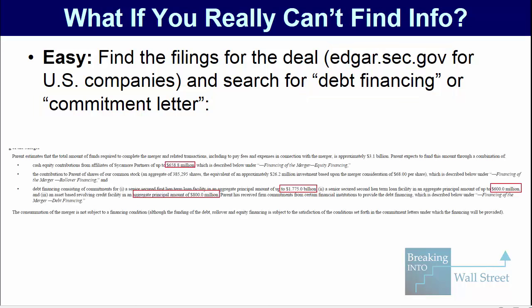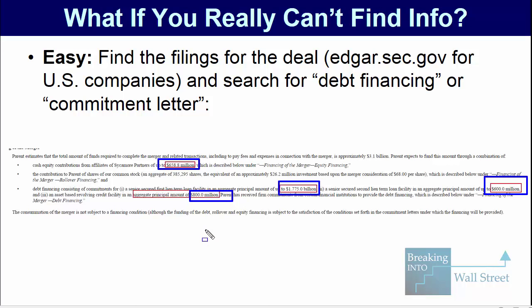Here's an example for the Belk deal. Just by going in and looking for 'commitment letter,' I found the exact amount of debt and equity used to fund the deal: $659 million of equity, and then debt divided into different tranches — about $1.8 billion, another $600 million, and another $800 million on top of that — coming out to roughly $2.4 billion in total debt initially drawn to fund the deal. If you're working with non-US-based companies, look up companies on the equivalent site for the stock exchange in your country, or go to their websites under investor relations.